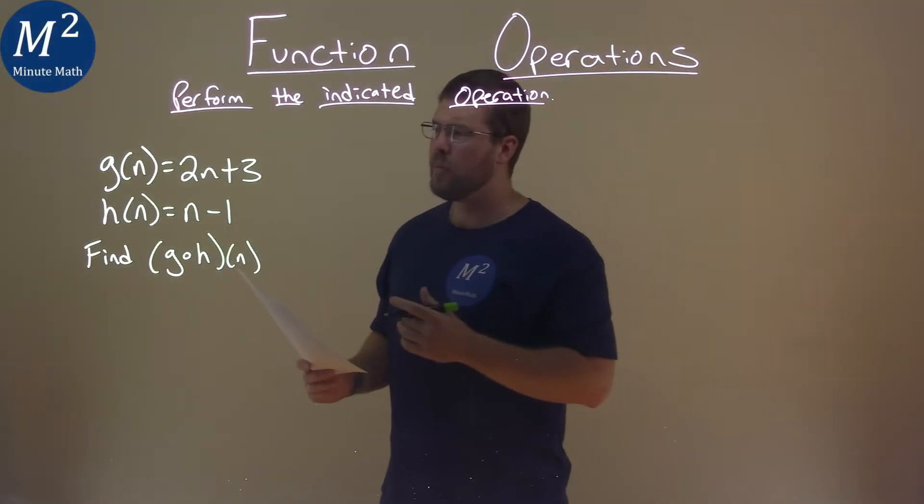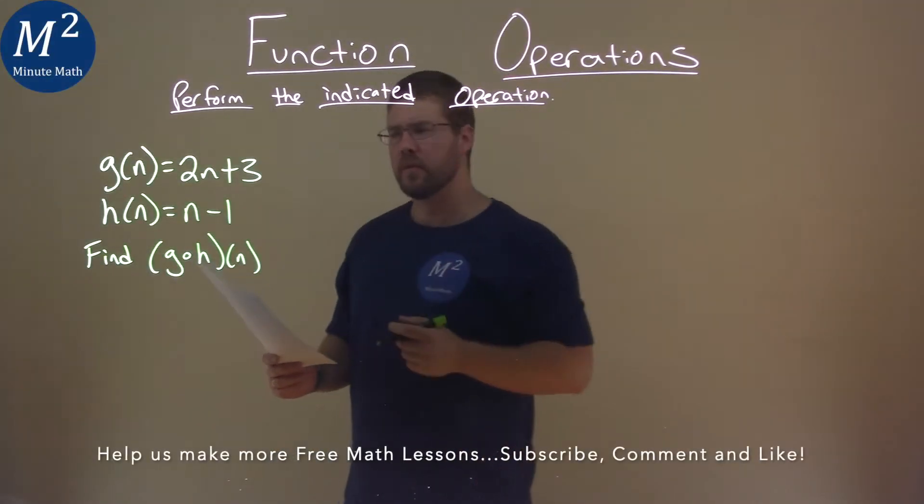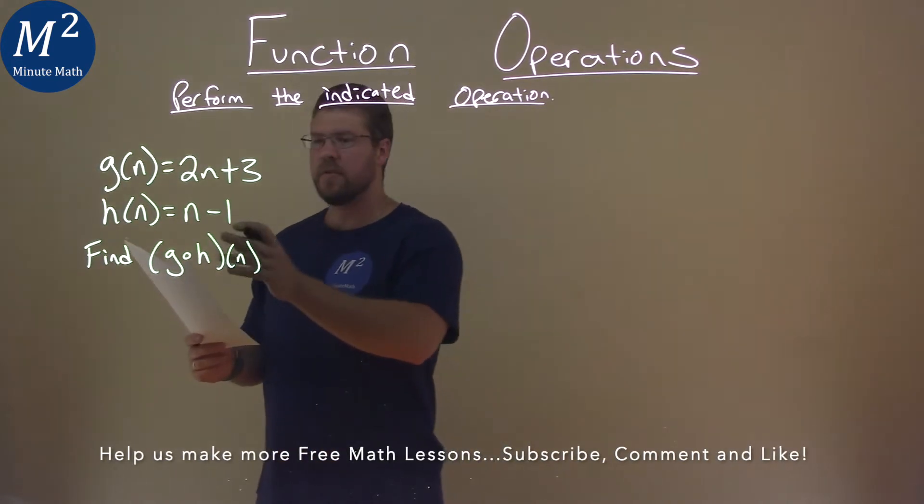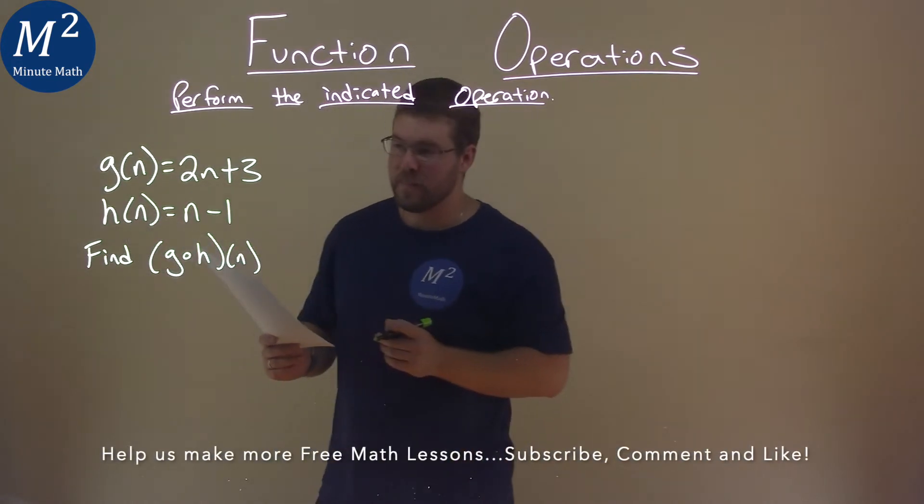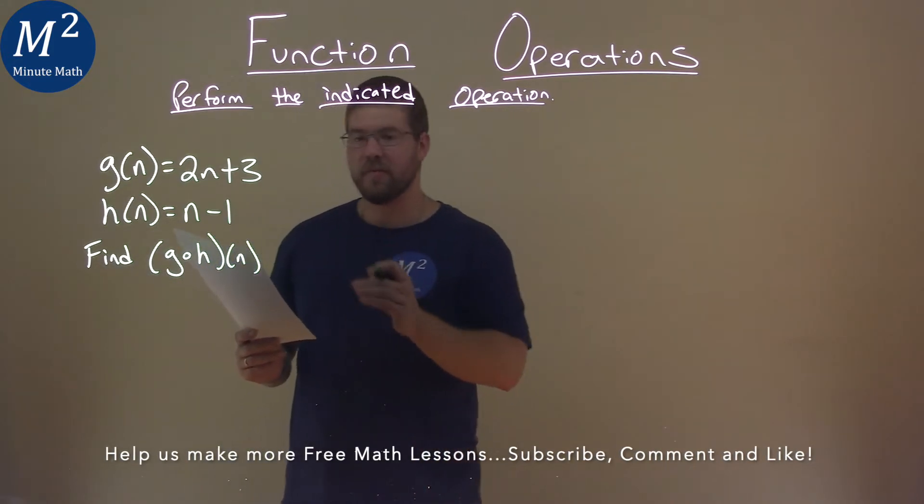We're given this problem right here. G of n equals 2n plus 3, H of n equals n minus 1, and we need to find G of h of n.